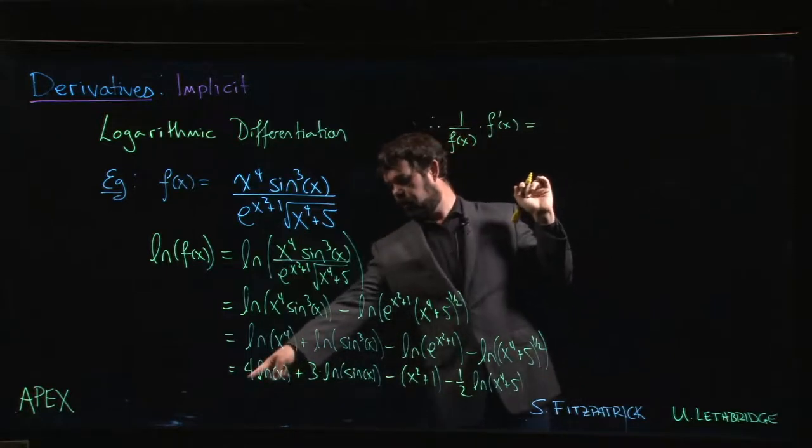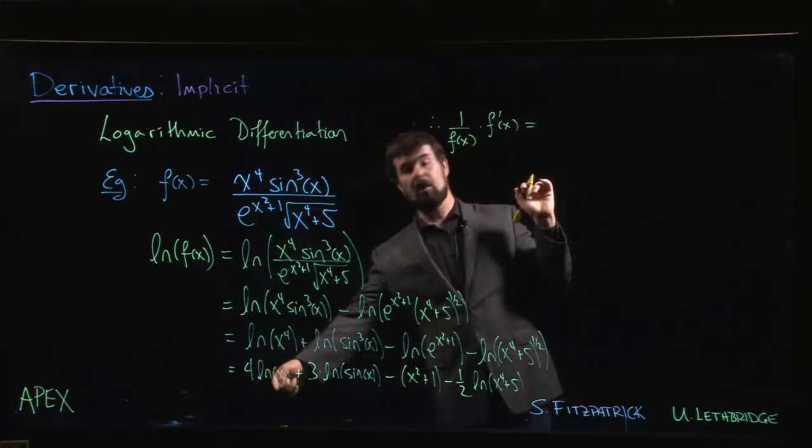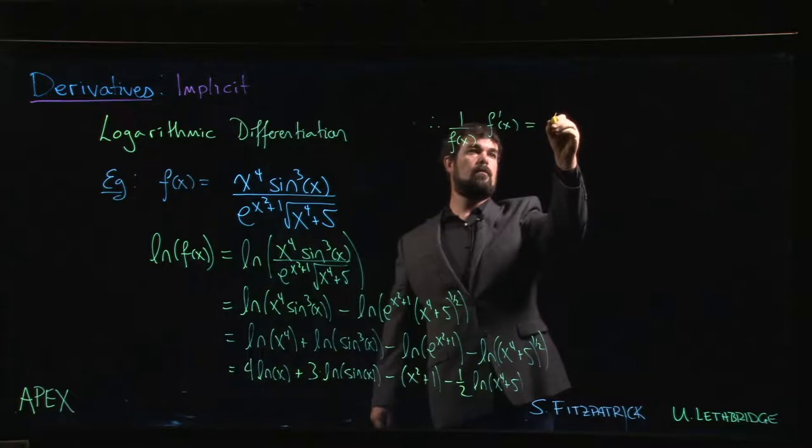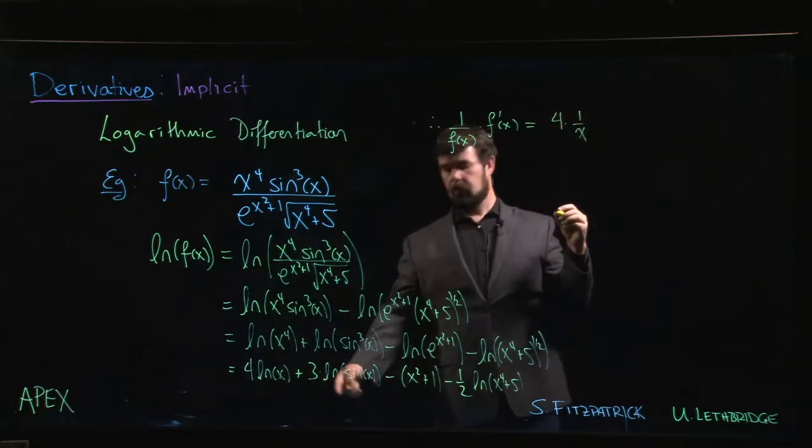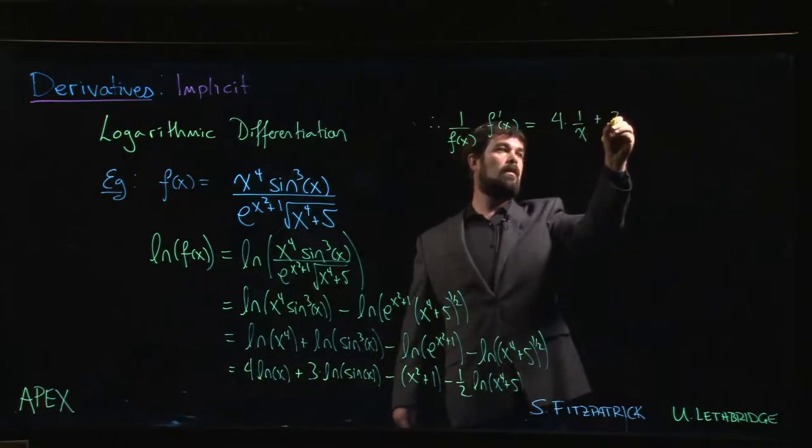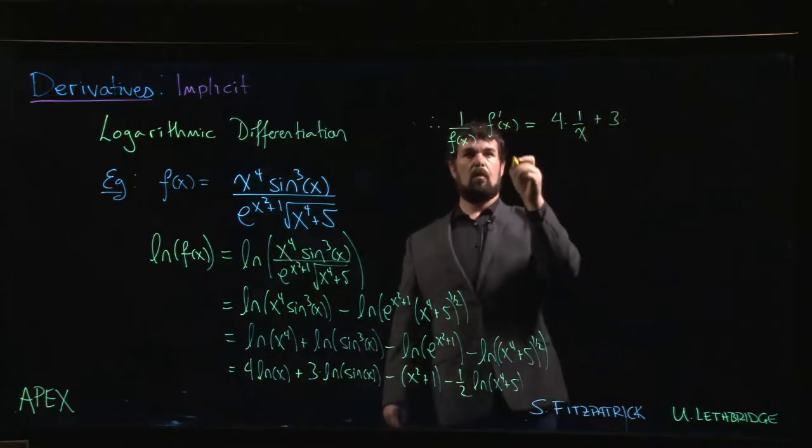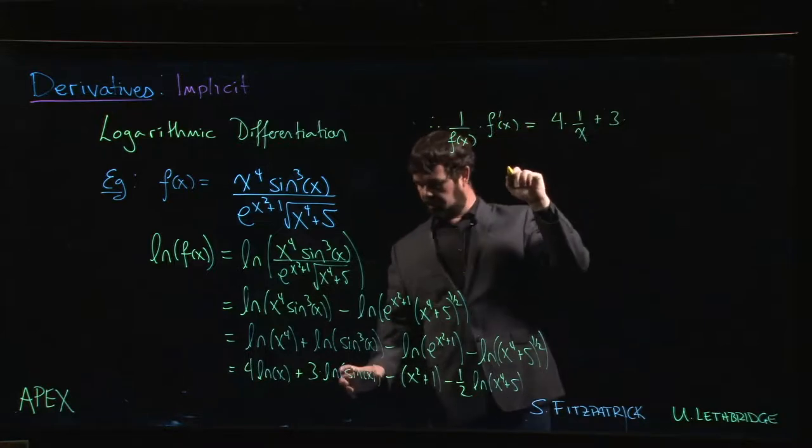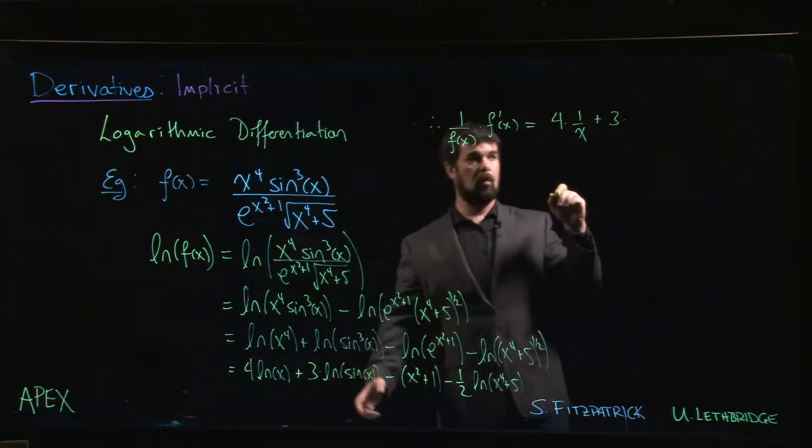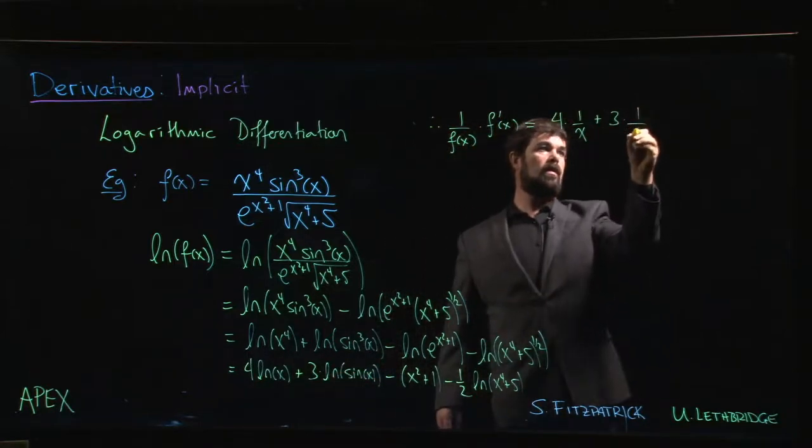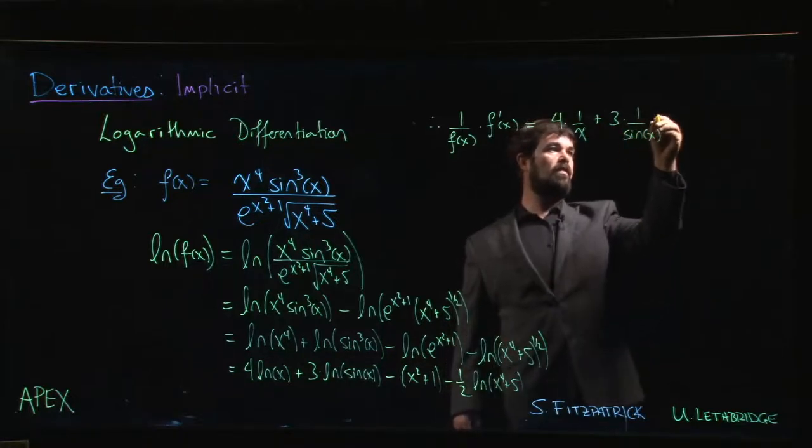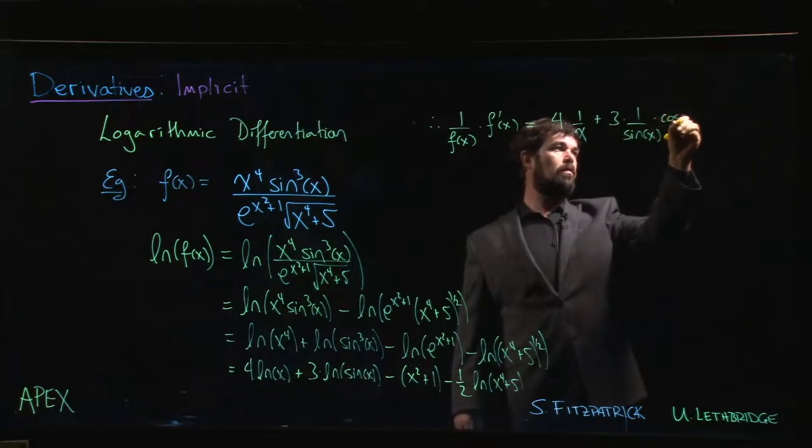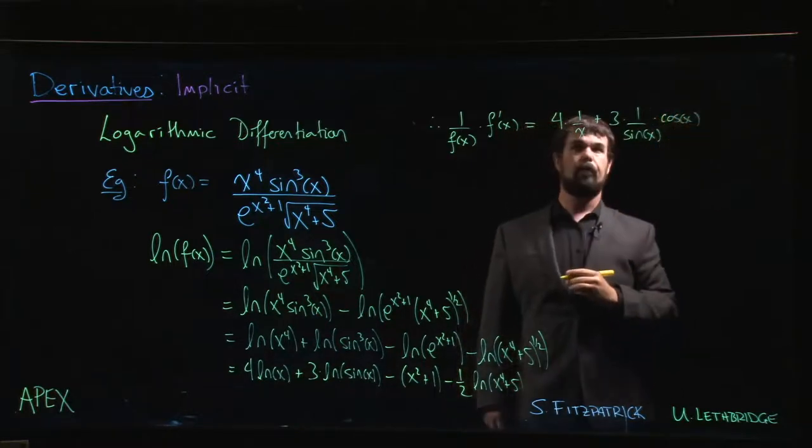Constant rule: four stays put. Derivative of the natural log is one over x. Again, constant rule. We use this same rule that you see over here on the left to deal with these. So we do one over the function on the inside times the derivative of that function—the derivative of sine is cosine.